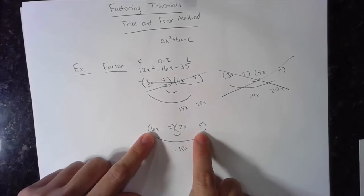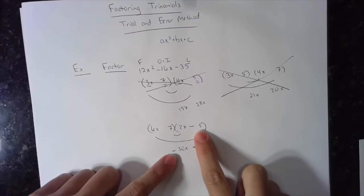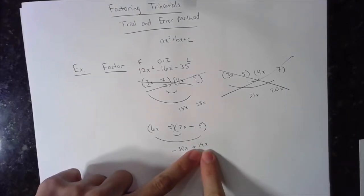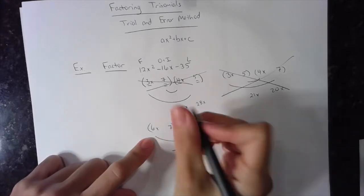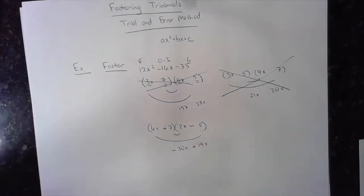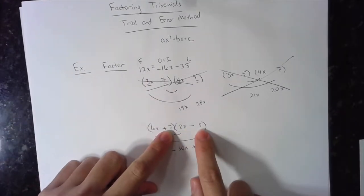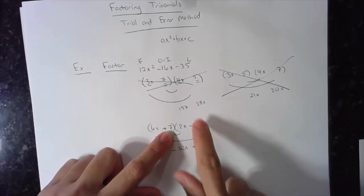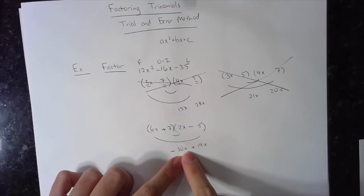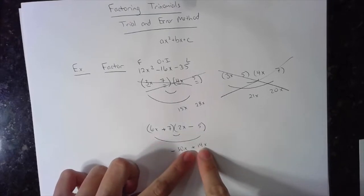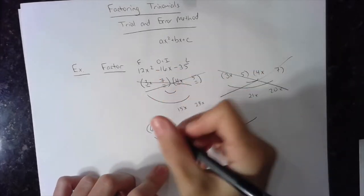Where did the negative 30 come from? The outer. So this has to be negative. Right? So now 6x times negative 5 is negative 30. This guy has to be positive. Where did the positive 14x come from? The product of the inner. This should be positive. Check it. 6x times 2x is 12x squared. That works. My last terms. Positive 7 times negative 5 is negative 35. That works. Outer and inner combined. Negative 30x plus 14x will combine to give me negative 16x. That's what I wanted. This guy's factored.